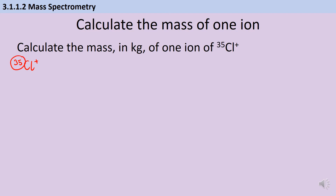then that 35 represents the mass of one mole of ions in grams. But I don't want to know what the mass of one mole is — I want to know what the mass of a single ion is. So although I know that one mole would weigh 35 grams, I need to do a little calculation.